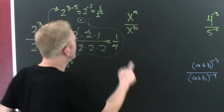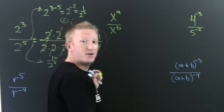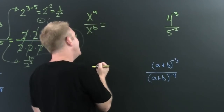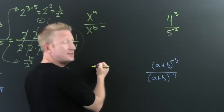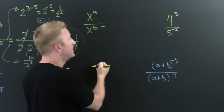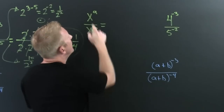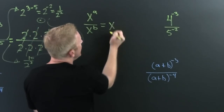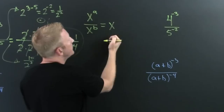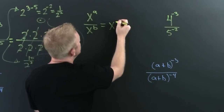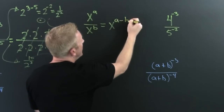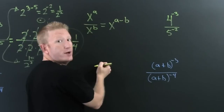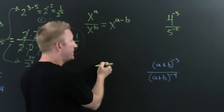This property: this is x to the — denominator from numerator — this is a minus b, when we have the same base and we're dividing.